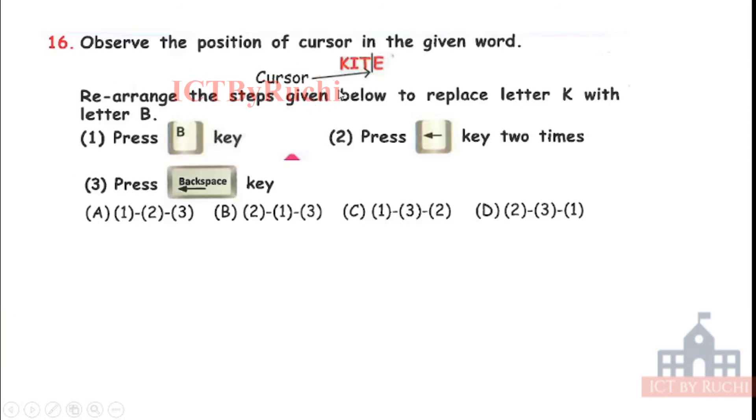Sixteenth. Observe the position of the cursor. We have a cursor in between T and E. Rearrange the steps given below to replace the letter K with letter B. We want to delete this letter K and we want to write here B. We want to make kite as byte. So what will we do? First is press B key. Second, press left arrow 2 times. Third, press backspace key. Think what we will do. Answer is D. So we will press 2 times left arrow. First time we will come between I and T. Second time we will come between K and I. When our cursor comes between K and I, we will press the backspace key. We will remove the K and then we will press the B. The kite becomes byte.